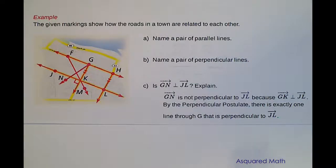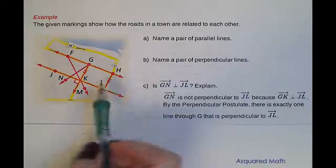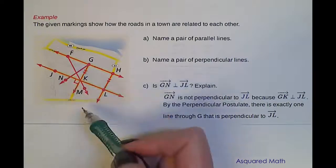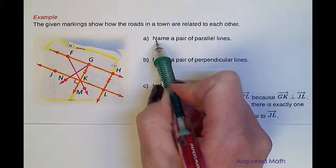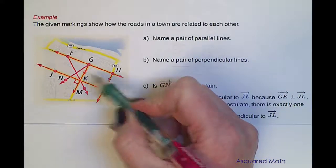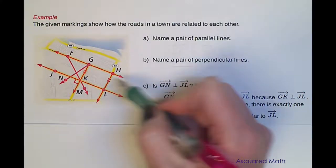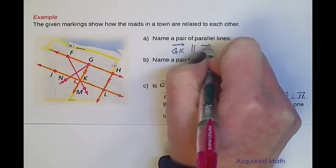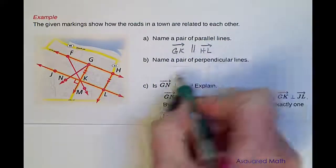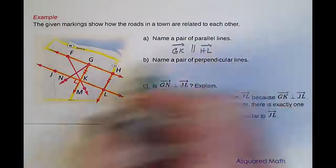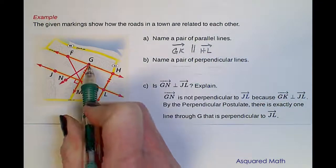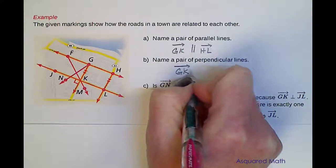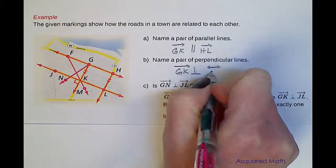Now let's look at an example with some streets within a city. Little markings tell us that one line is parallel to another, and we have 90-degree angles marked as well. First, we want to find a pair of parallel lines — the arrows indicate that ray GK is parallel to ray HL. For part B, we name a pair of perpendicular lines: ray GK is perpendicular to line JL.